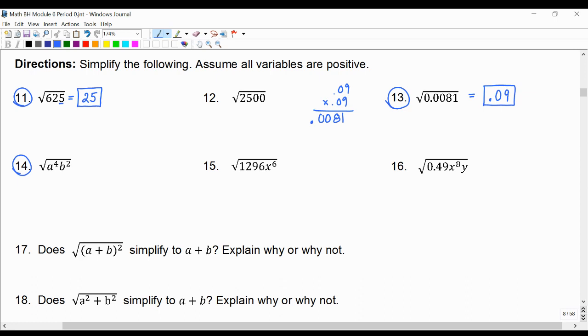Also with variables, this is asking us to find the side length of a square if its area is a to the fourth b to the second. We could say to ourself, well this can be thought of as going back to exponent properties, a squared times a squared, because a squared times a squared is a to the fourth, so the square root would be a to the second.